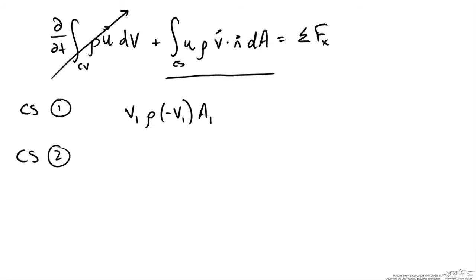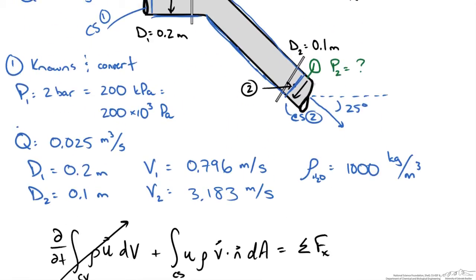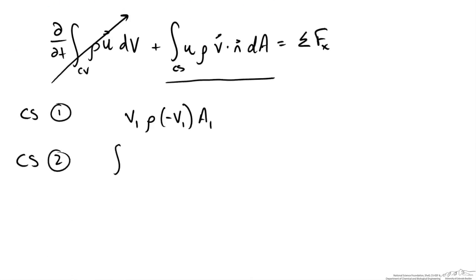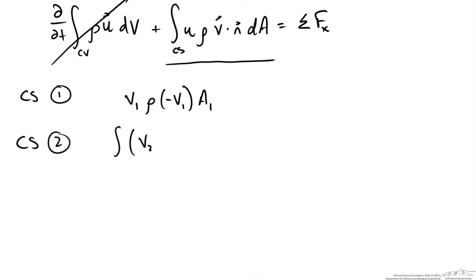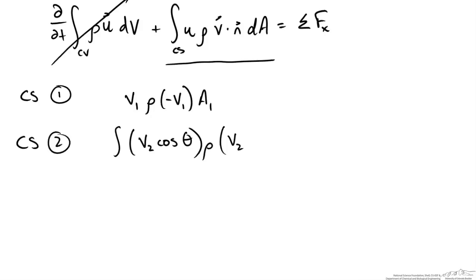For control surface 2, the x component of velocity is not purely horizontal — there is both a y component and an x component exiting the pipe section. So our x component is v2 cosine theta. It is to the right, which is positive, so we do not add a negative sign. We multiply by the density and since the flow is leaving our control volume, the normal and flow direction are the same, so the dot product is positive, giving just v2. Assuming uniform velocity we multiply by A2 and eliminate the integral.